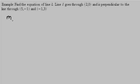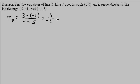So the slope of the perpendicular line — I'll use a subscript p — equals y2 minus y1 over x2 minus x1, which gives us 4 over negative 6, which is negative 2 thirds. So the slope of line L, with subscript L, equals 3 halves since it's perpendicular.